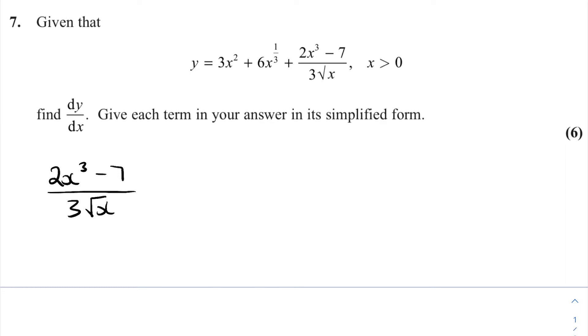So let's write this as 3 lots of x to the half and then separate the fraction because I have two terms on the top both being divided by this 3x to the power of half, I can divide them individually. It doesn't apply if there are two terms on the bottom by the way, but this is okay to separate.